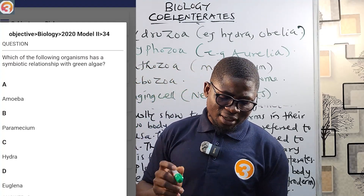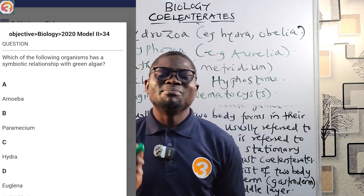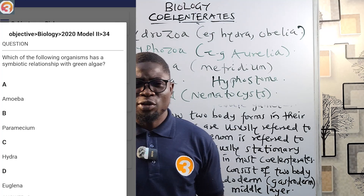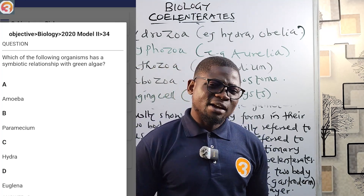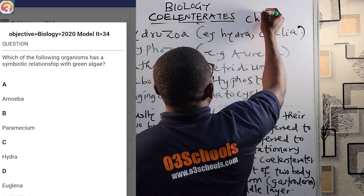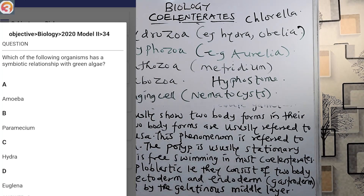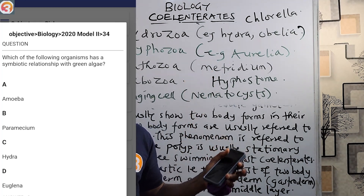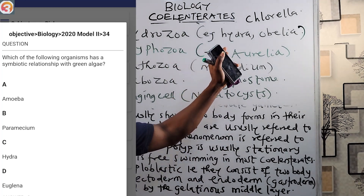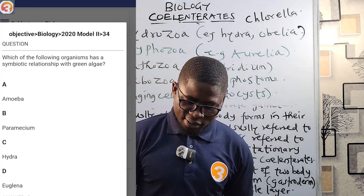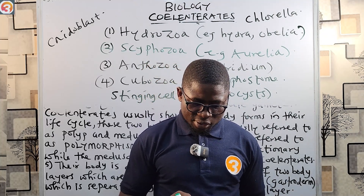From 2020, question number 34: 'Which of the following organisms has a symbiotic relationship with green algae?' The correct answer is hydra. The hydra and green algae — specifically Chlorella — show a symbiotic relationship. Chlorella lives inside the hydra's cells, so the algae cannot likely survive without the hydra. The hydra provides shelter and protection for Chlorella, while the algae provide food (nutrients) in return.